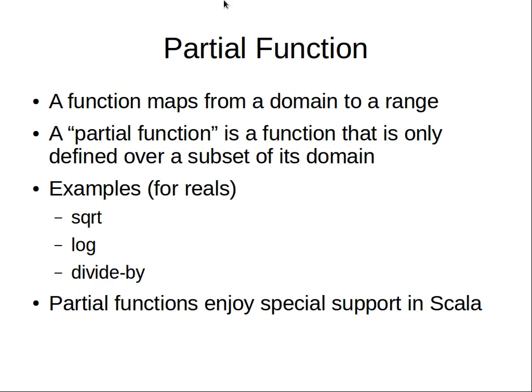A partial function is a function that's only defined over a subset of its domain. For example, we're dealing with the square root function as applied to reals. Square root, unless we go into the complex number domain, is only defined for real numbers — specifically the numbers to which we apply it, if they're greater than or equal to zero. It's not defined for numbers less than zero, if we're staying purely within the real numbers.